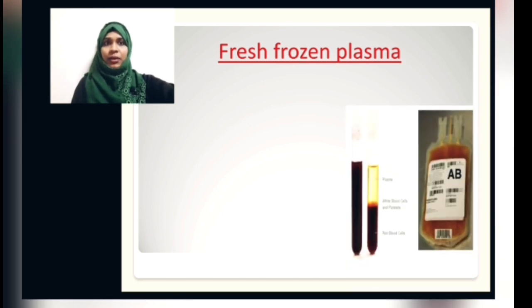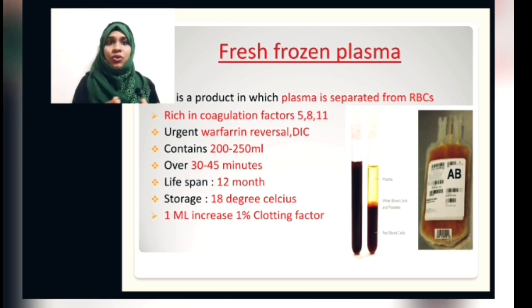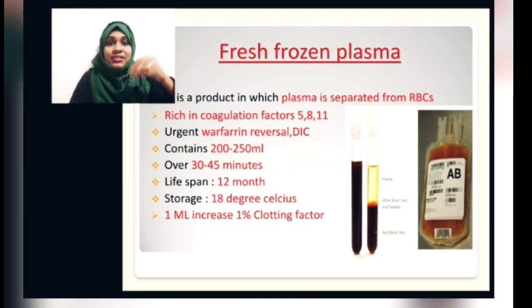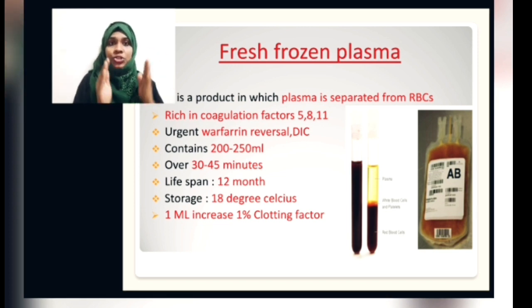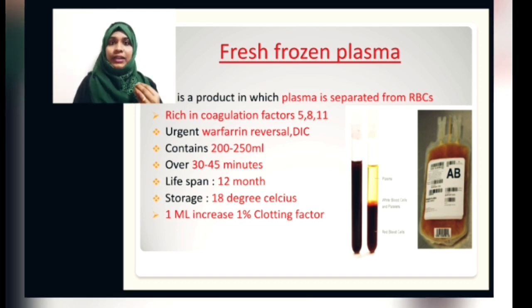FFP — Fresh Frozen Plasma — is separated from RBC and is rich in coagulation factors 5, 8, and 11. Its most common uses are to correct coagulation deficits, treat high INR, warfarin reversal, and disseminated intravascular coagulation. Each unit contains around 200 to 250 ml and should be transfused over 30 to 45 minutes. The lifespan for FFP is 12 months and it must be stored at minus 18 degree Celsius. Transfusing 1 ml of FFP increases clotting factor by 1%.